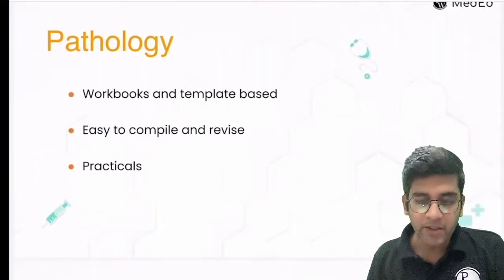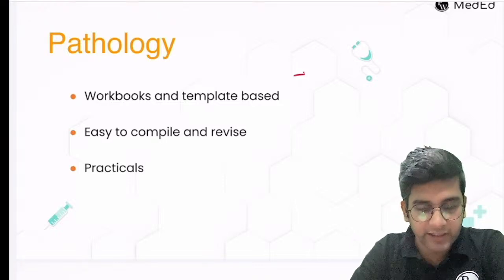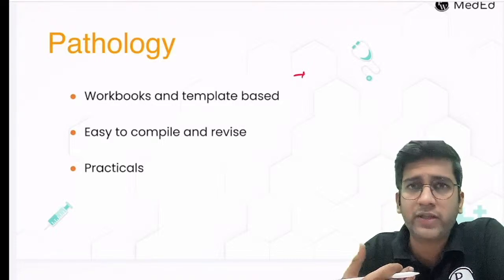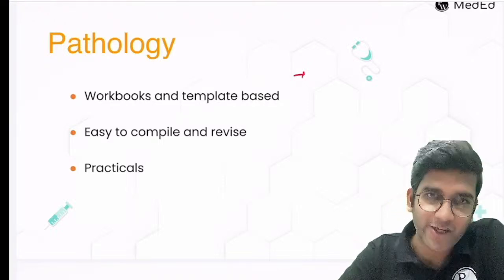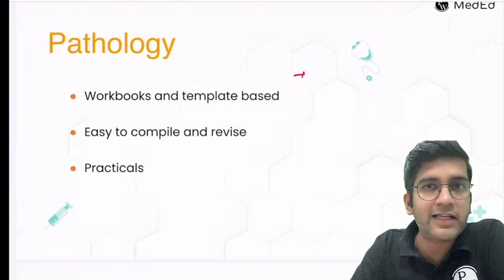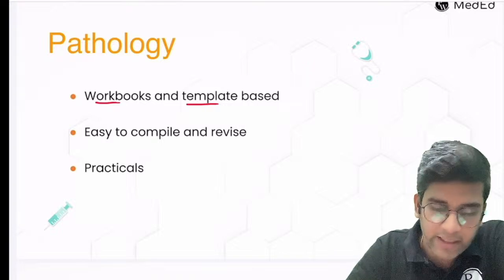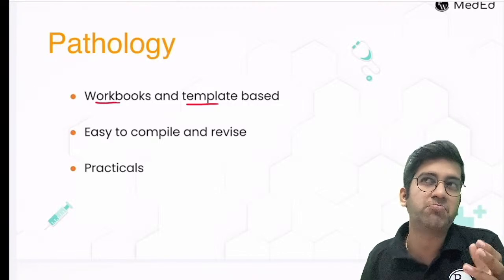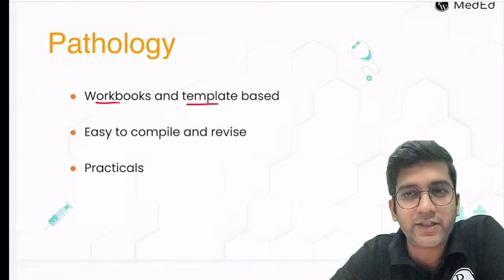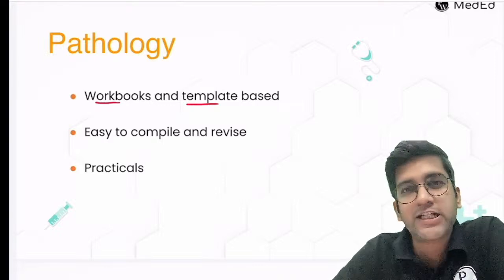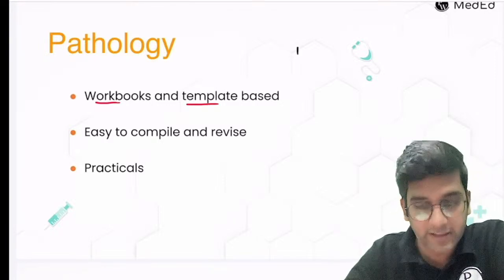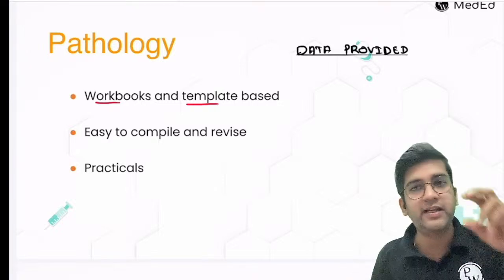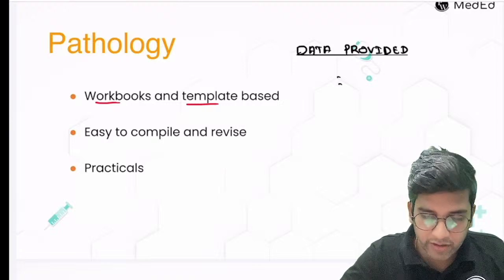For pathology FARAY, based on a poll with you, most of you said systemic pathology is the difficult part. I'll start from systemic path, then go to hematology, and also cover general pathology. I'll use a workbook and template-based approach. For example, if there's a long answer on gastric carcinoma, you first write the clinical history — the age and symptomatology based on the data given — creating the first few lines from the question itself.